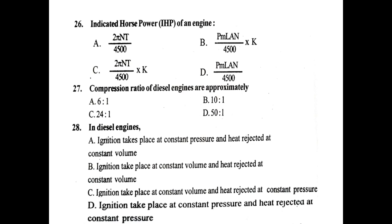Indicated horsepower of an engine. Compression ratio of a diesel engine is approximately 24:1. Ignition takes place at constant pressure and heat is rejected at constant pressure.